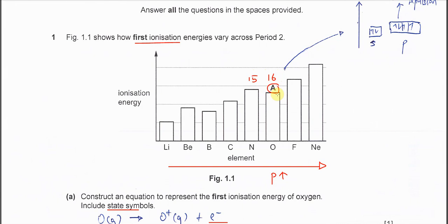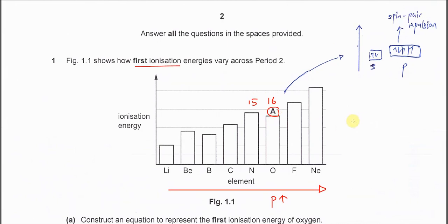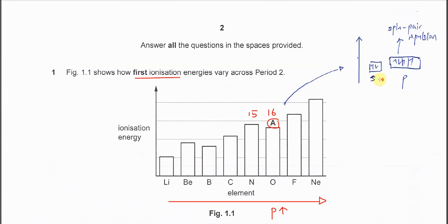So explain this A. Why is lower IE? Okay, it's very easy because it's group 16. So it has 6 valence electrons. The electrons arrangement in this orbital diagram should look like this.